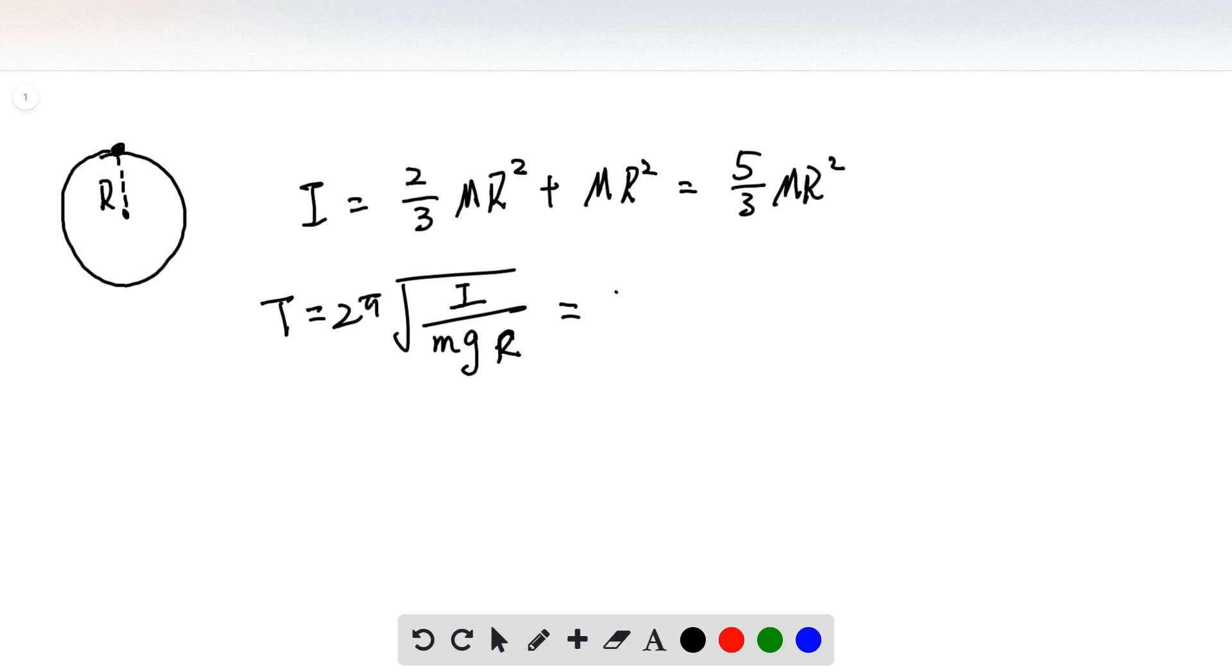Plug in the number, 2, 5, or 5, it's going to be 5 mR squared, m, g, r. m canceled, r canceled, so we get, sorry, there's a 3 here. It's going to be 2 pi squared, 5 r over g.